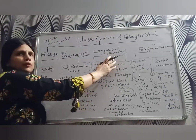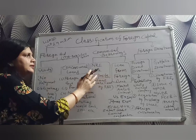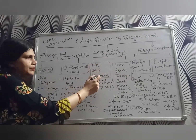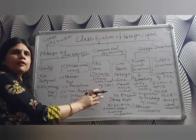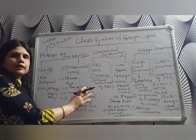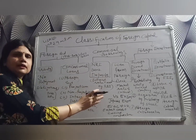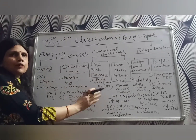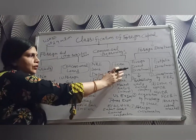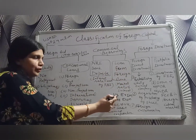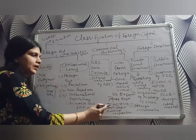The next type is commercial borrowings. India also receives foreign capital through commercial borrowings, which include NRI deposits and loans from foreign banks. NRI deposits are surplus deposits held in Indian banks. Foreign banks such as the US Export-Import Bank, the Japanese Export-Import Bank, and the ECG (Export Credit Guarantee Corporation) of the UK provide loans to the Indian government.